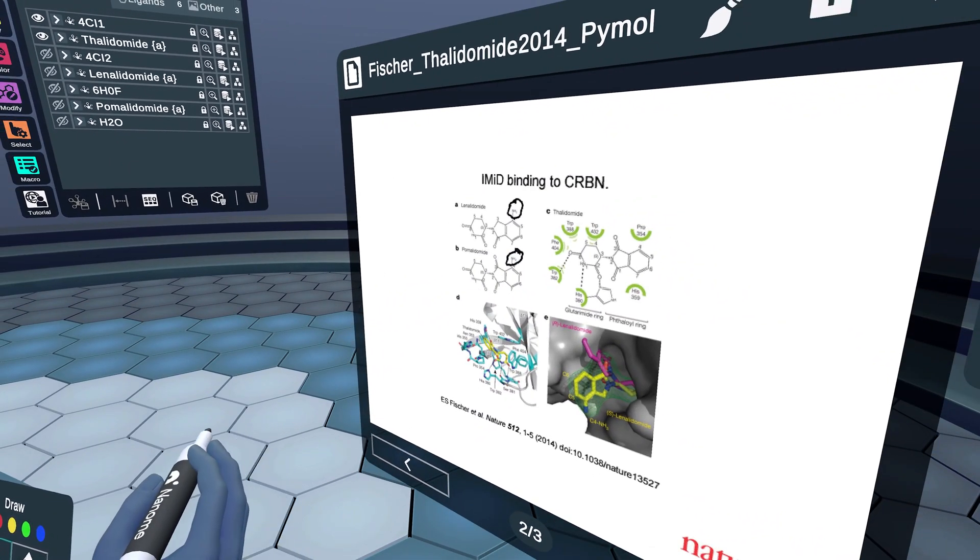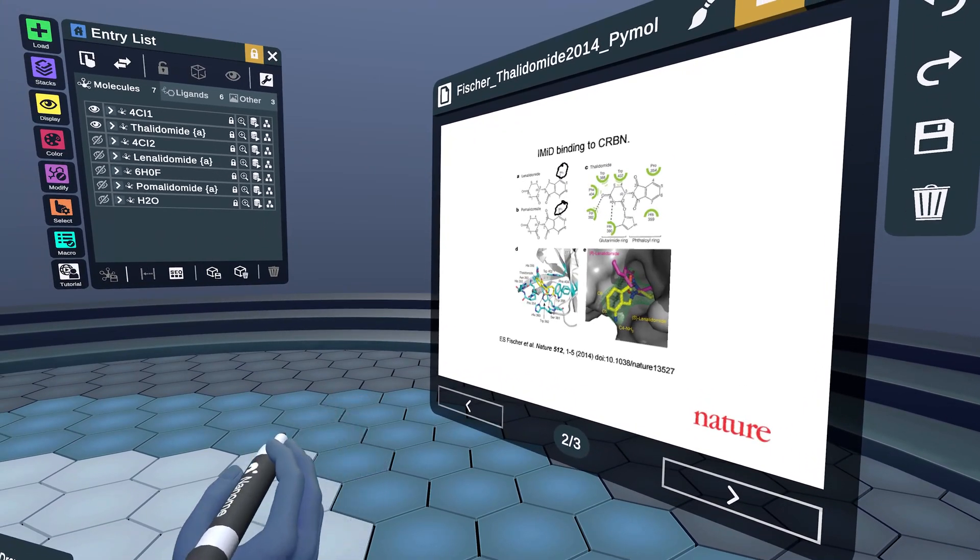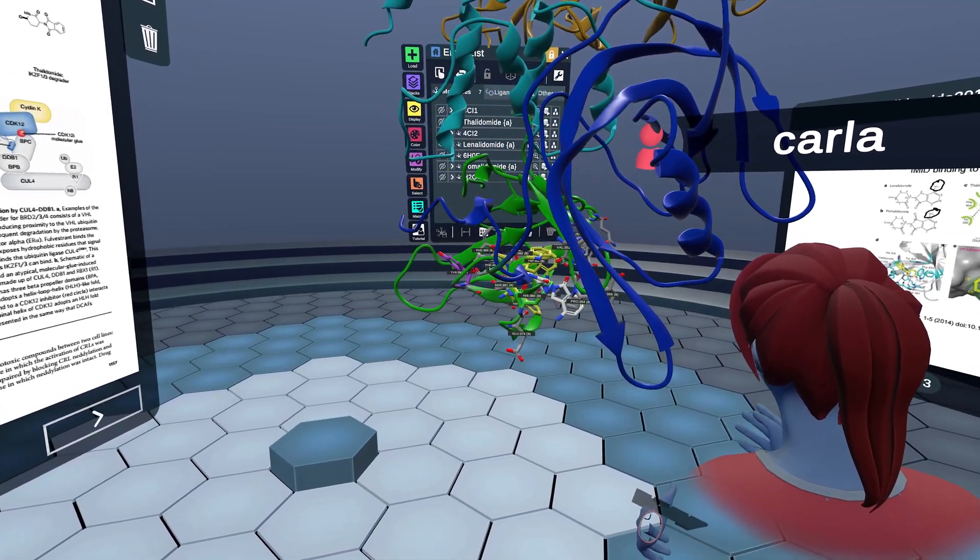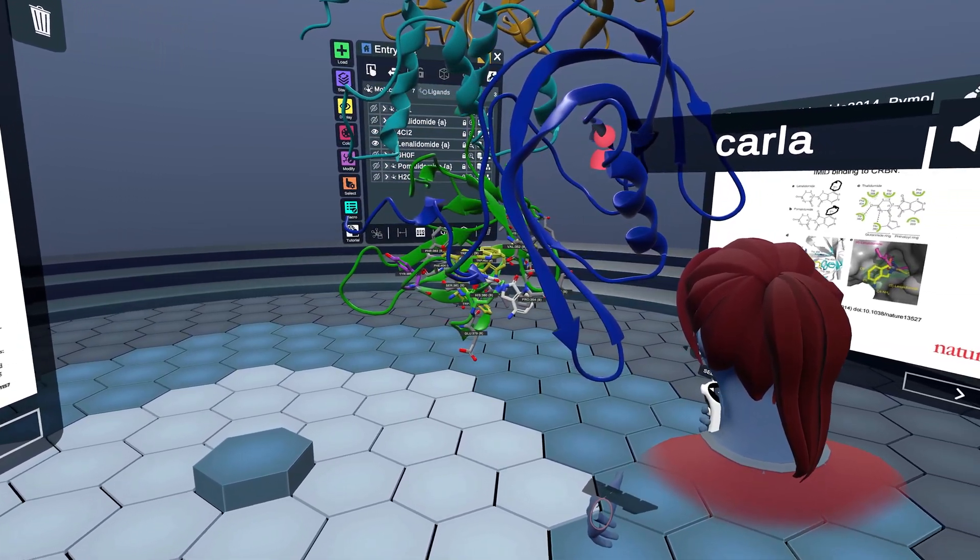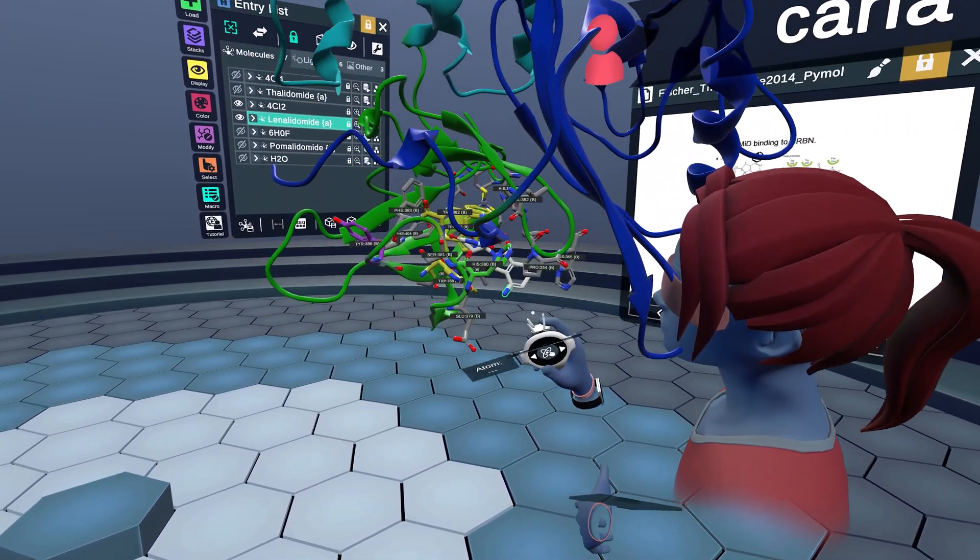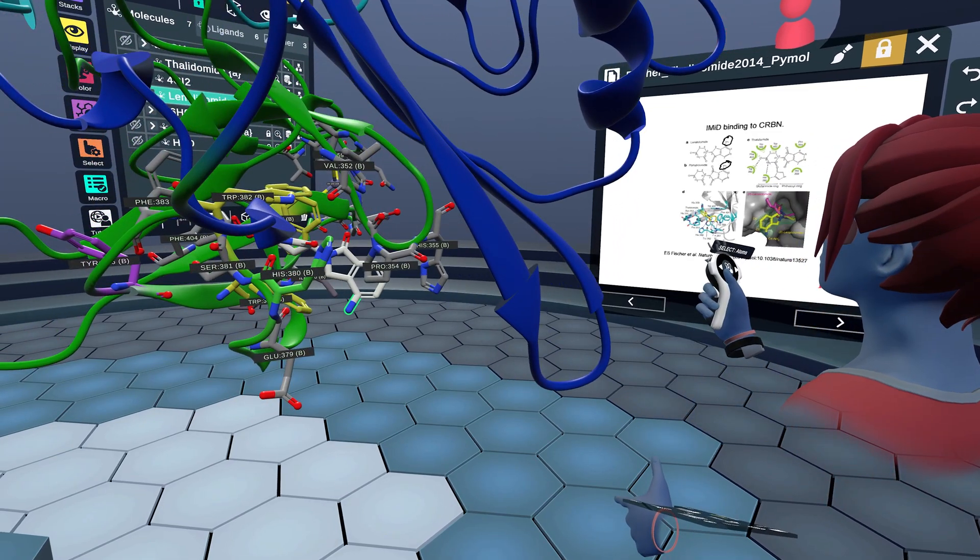Next, we are going to take a look at PDB 4CI2, which is of lenalidomide, published by the same group in the same paper. Here, we can look at that C4 amine in the pocket. You can see that that amine is solvent exposed.